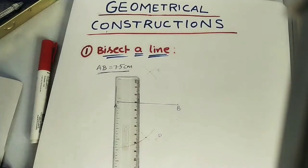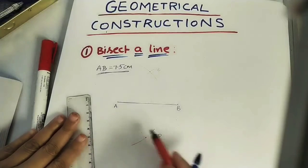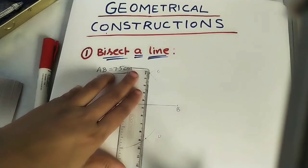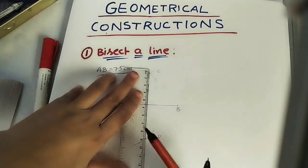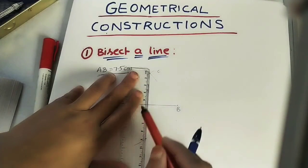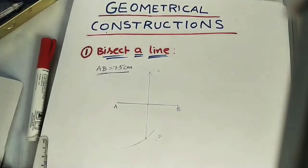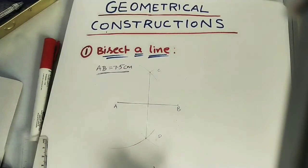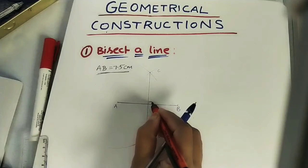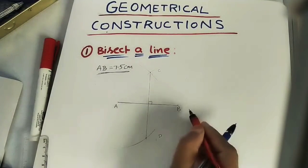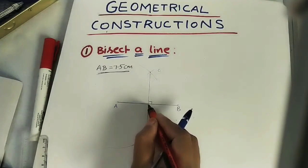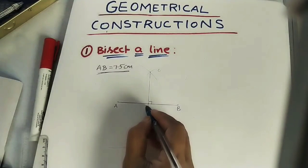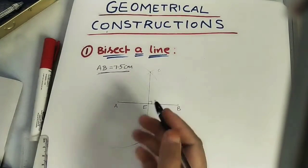Join C and D. Always remember to do the entire diagram with pencil in the drawing hall and in the exam. This line CD is called the bisecting line, or perpendicular bisector. It is 90 degrees to the given line AB.